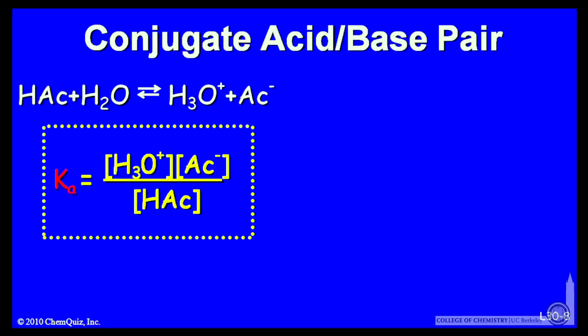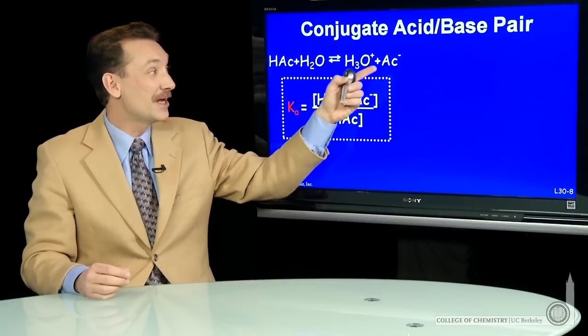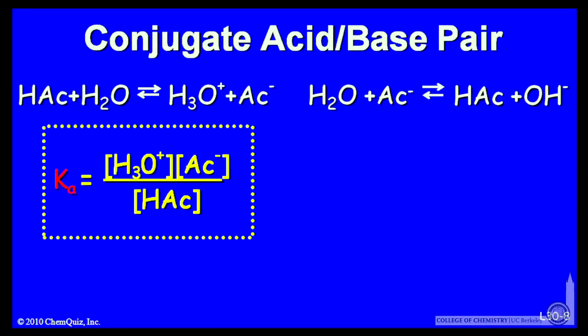I know I can write Ka for this reaction: the products H3O plus AC minus over HAc. And of course, pure water doesn't appear in equilibrium constant expressions. I can write the reaction of AC minus with water. That's the conjugate base of acetic acid.